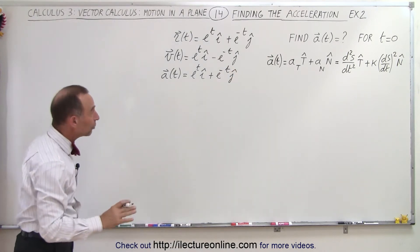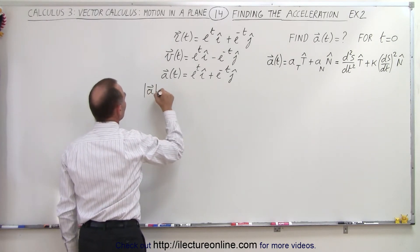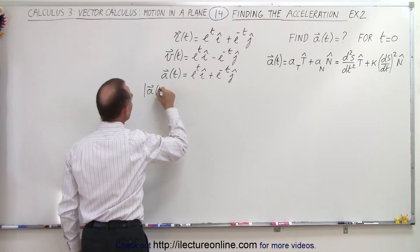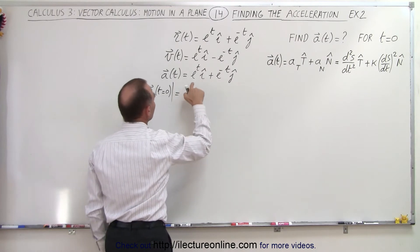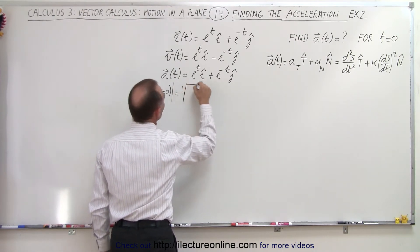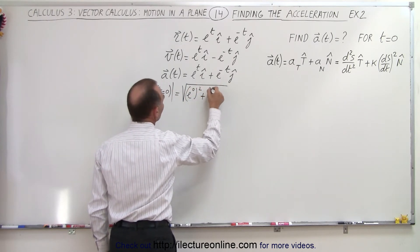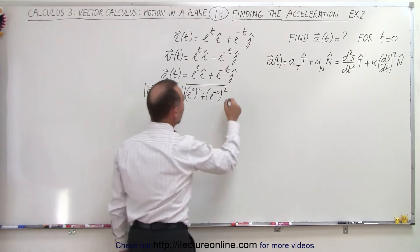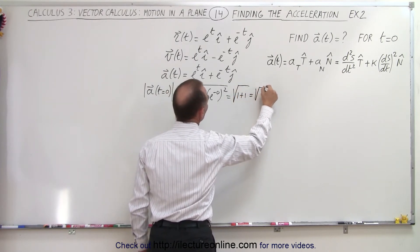Now let's find the magnitude of acceleration when t is equal to zero. That would be the square root of e to the zero squared plus e to the minus zero squared, and of course e to the zero is equal to one, so it would be equal to the square root of one plus one, or the square root of two.